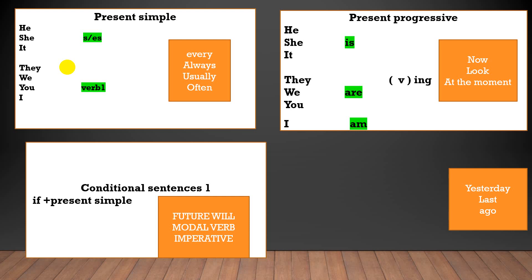How can I form the negative in present progressive? He is not studying now. They are not studying now. I'm not studying. And for questions, I put the helping verb at the beginning: Is he studying now? And so on.